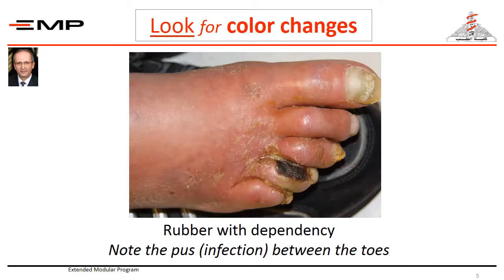This is the same patient, but with the foot left dependent for one minute. You can clearly notice the rubor with dependency. Notice as well pus infection — you can see it here between the toes, in relation to the black gangrenous patch.